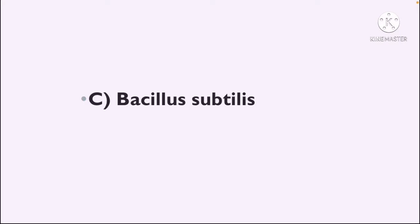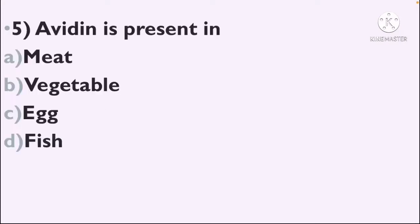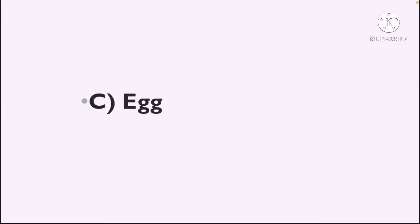Next question: Avidin is present in — Option A: Meat, Option B: Vegetable, Option C: Egg, Option D: Fish. The correct answer is Option C, Egg.